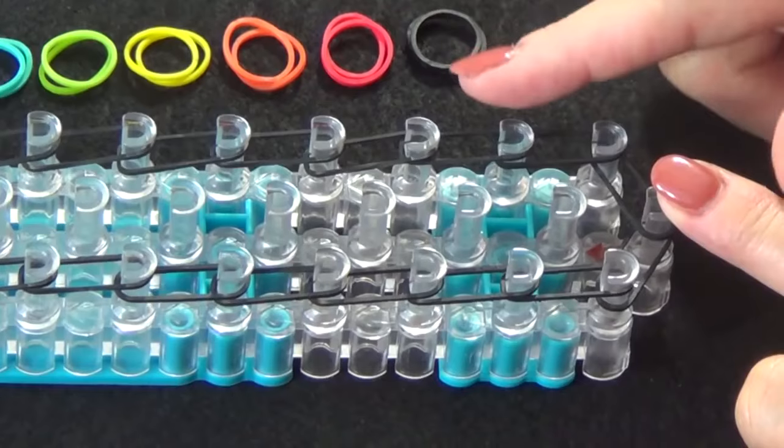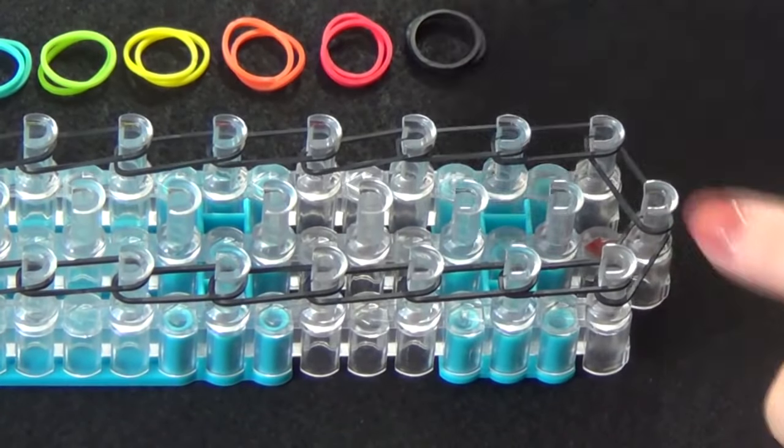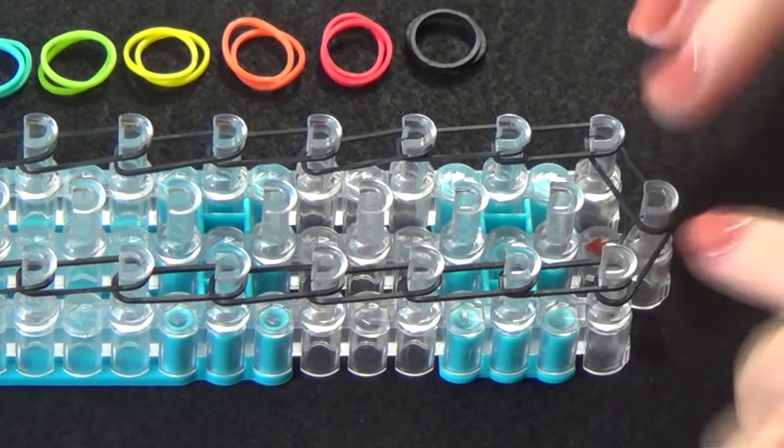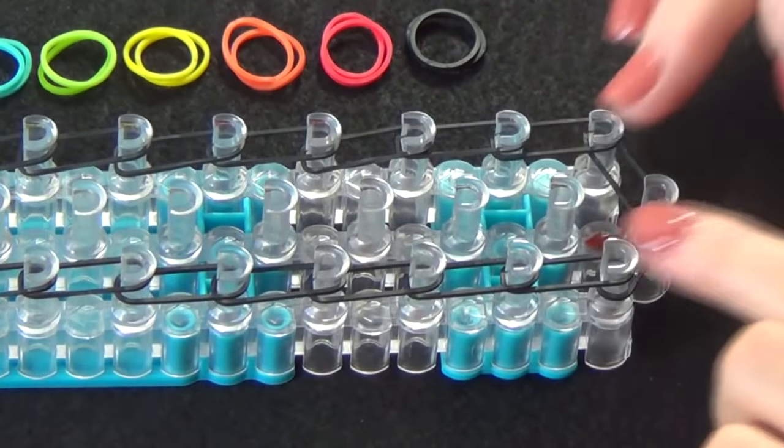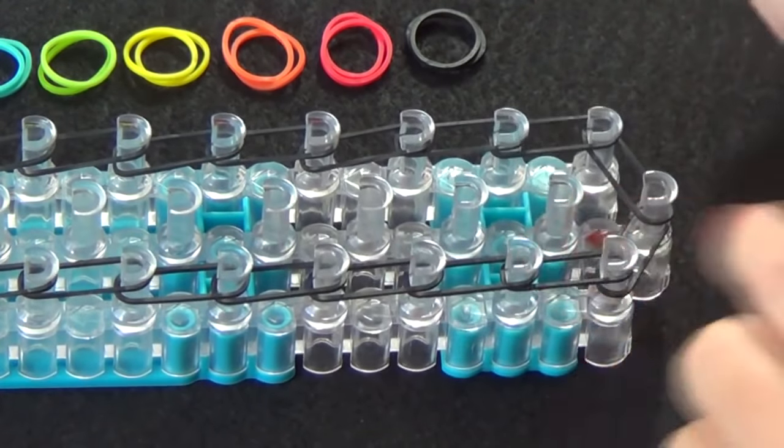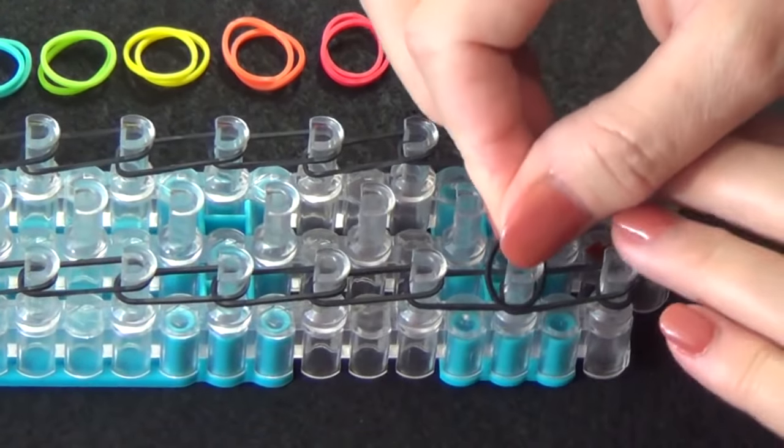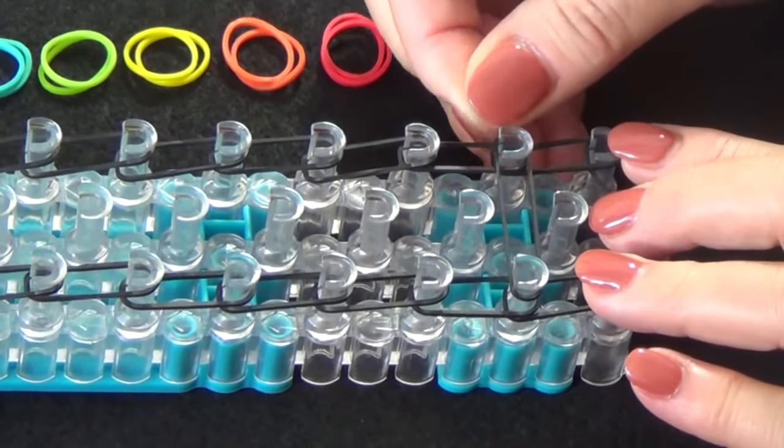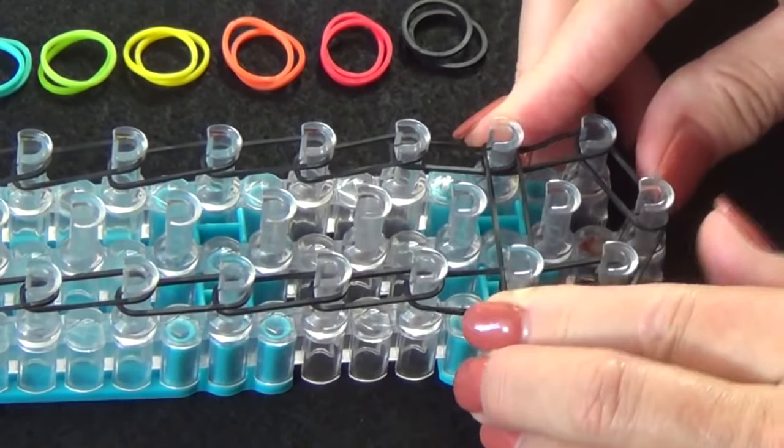Now we'll be placing bands across the loom. Again, these will be black bands. We'll skip this first row of bands. We'll start from the second pin on the side of the loom, and we'll stretch that across to the second pin on this side.